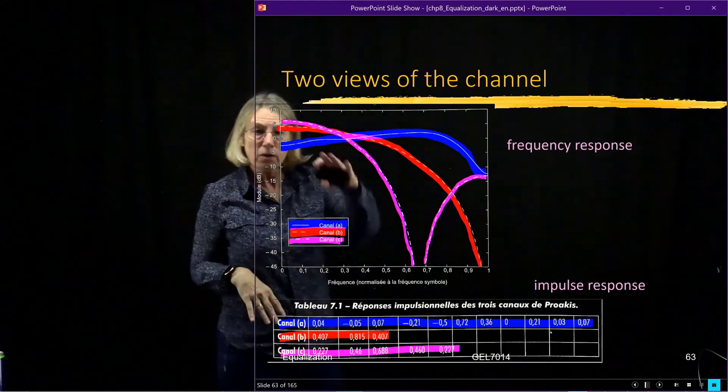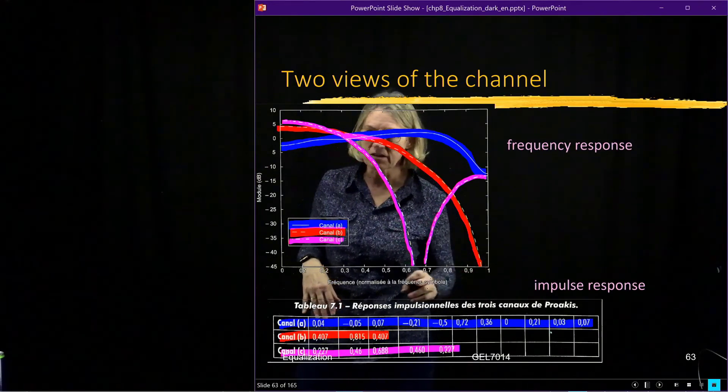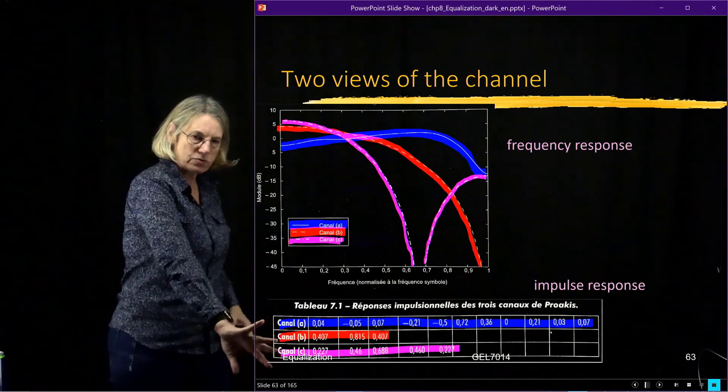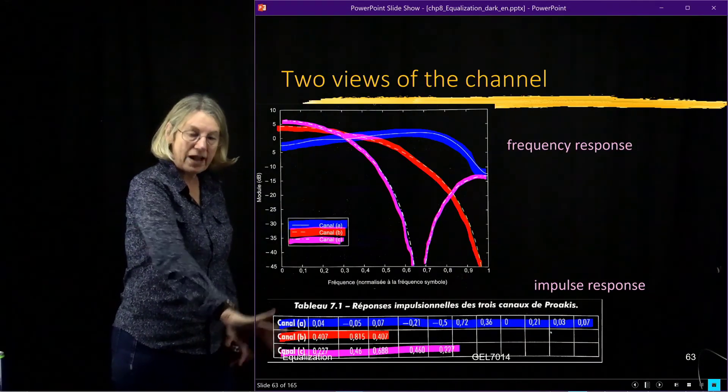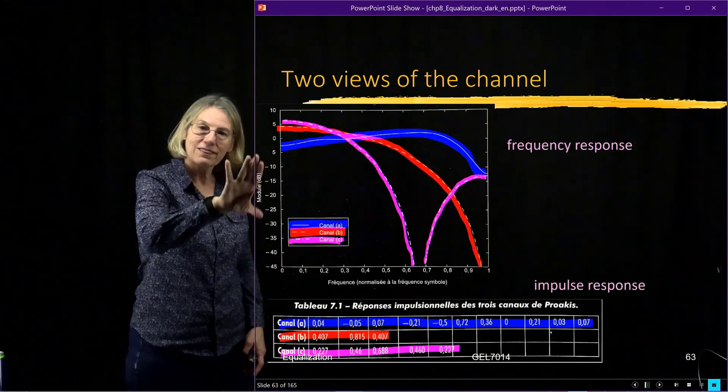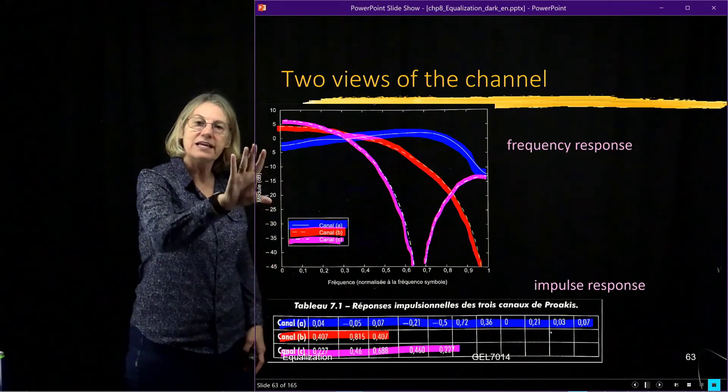Which is why we really turn to the interpretation of forcing it to be ISI zero as being the equivalent of inverting the channel frequency response. Because inverting the channel frequency response, we get a lot more intuitions about what's going on.